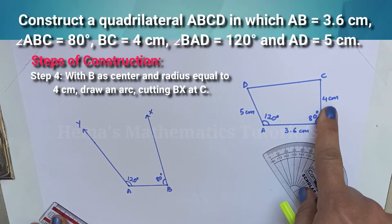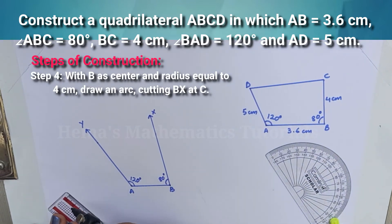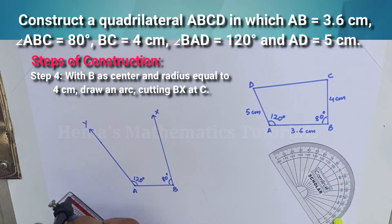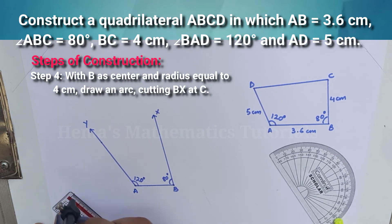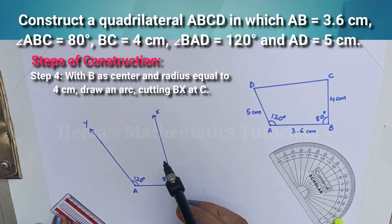Now, BC is equal to 4 cm. So open your compass equal to 4 cm. With B as center, draw an arc which cuts ray BX.